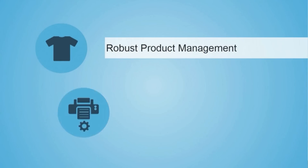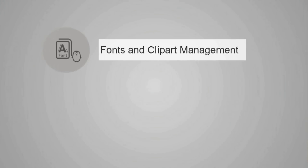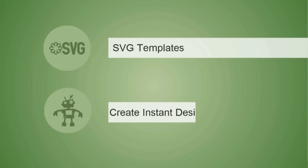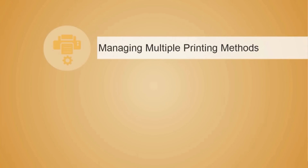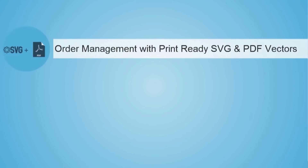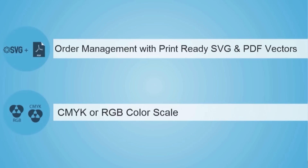Now let's see how the powerful backend system that comes with all open source e-commerce platforms gives you full control over your web store. Along with all default store admin features, you get additional web-to-print controls for robust product management with print-related configurations, fonts and clipart management, and the ability to create and manage design ideas using the visual template builder. Import SVG templates to create instant design ideas, manage multiple printing methods and related price configurations, and handle order management with print-ready SVG and PDF vector output files with CMYK or RGB color scale.